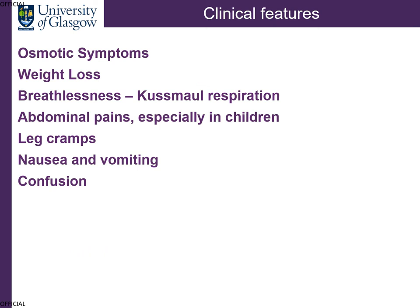The clinical features of diabetic ketoacidosis include osmotic symptoms from high blood sugars causing glucose to come out in the urine taking fluid with it, weight loss because of the breakdown of fat and muscle, Kussmaul respiration or breathlessness because of metabolic acidosis driving hyperventilation to blow off carbon dioxide and reduce acidity in the blood. You get abdominal pains specifically in children as a direct effect of the ketones, leg cramps because of electrolyte imbalances, nausea and vomiting. Ketones can also drive confusion because the body behaves as if it's being starved of glucose, and significant dehydration can also affect confusion levels.